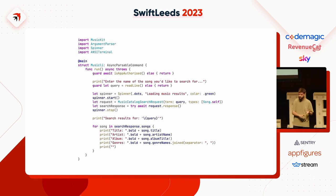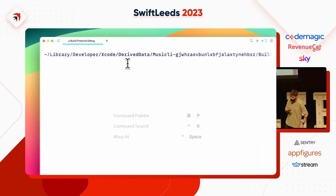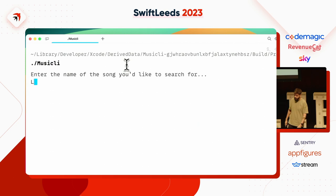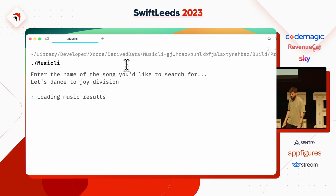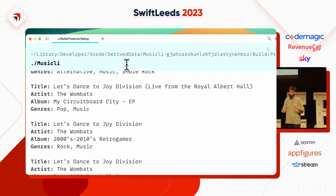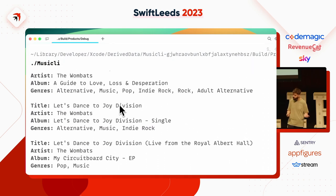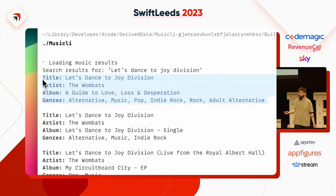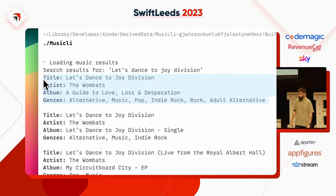This is what it looks like: I go into the terminal — remember, don't do it in Xcode — search for a song, 'Start to Join the Vision' in this case, and you can see there's a spinner while the async operation is happening. Then you get all the bold titles. It's a bit nicer to look at — probably wouldn't win an Apple Design Award, but it looks all right.